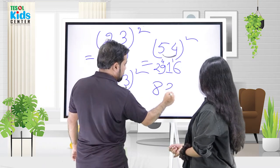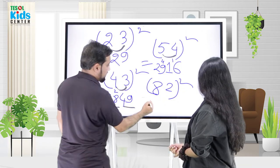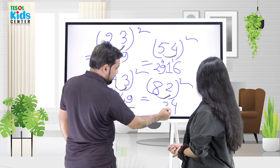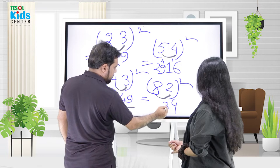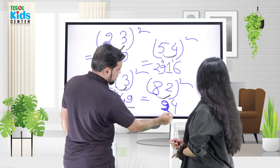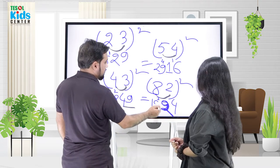Let's try 82 squared. 4, then 16 doubled is 32, carry 3. 64 plus 3 equals 67. So 6724.